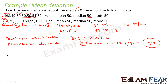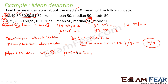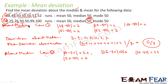Now let's find mean deviation about median for Case 2. The median is also 50 here. For 0: mod of 0 minus 50 equals 50. For 25: mod of 25 minus 50 equals 25. For 26: mod of 26 minus 50 equals 24. For 99: mod of 99 minus 50 equals 49. For 100: mod of 100 minus 50 equals 50.